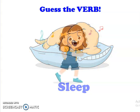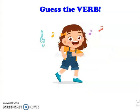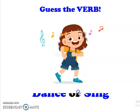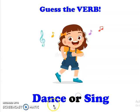Picture number three. Guess the verb that can describe the action of this girl. Here you can use two verbs. The girl can dance or sing. Excellent.